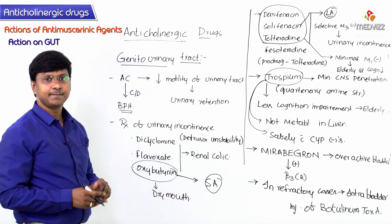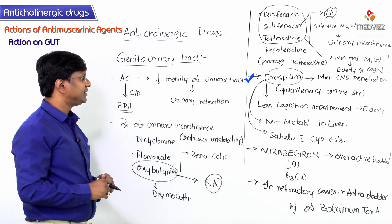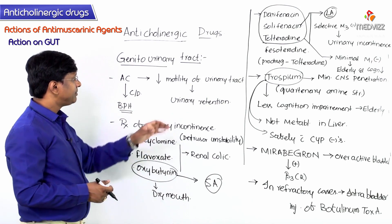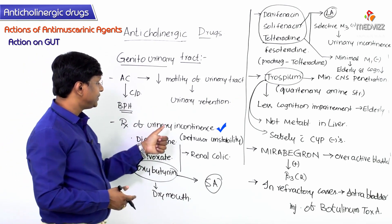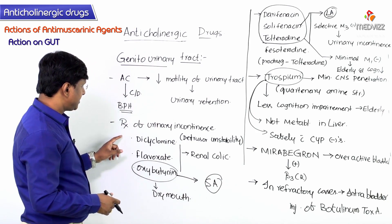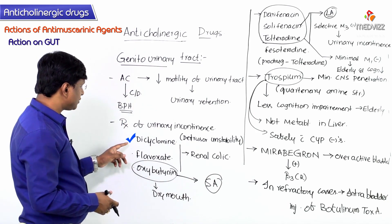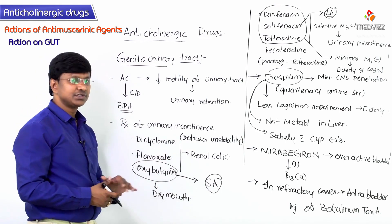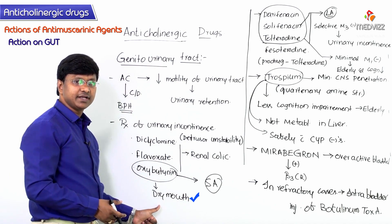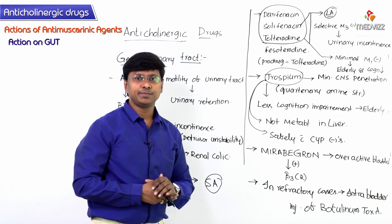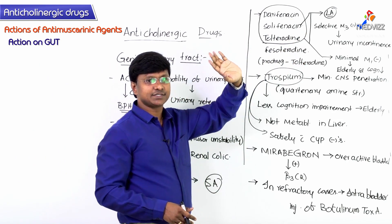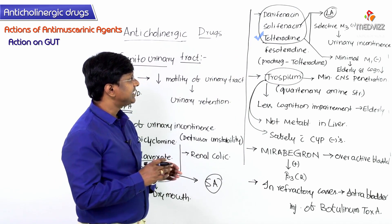Quick revision: Anticholinergic drugs decrease motility of the urinary tract causing urinary retention, hence contraindicated in BPH. They are used in urinary incontinence due to detrusor instability. Drugs used include dicyclomine, flavoxate, and oxybutynin — also used for renal colic. Oxybutynin causes the most severe dry mouth and is short-acting. Selective M3 antagonists: darifenacin, solifenacin, tolterodine, and fesoterodine — fesoterodine is a prodrug of tolterodine.